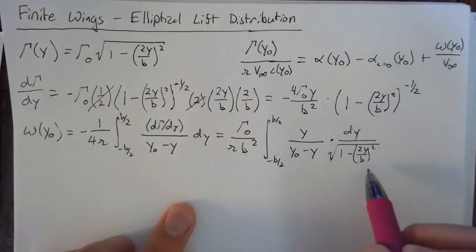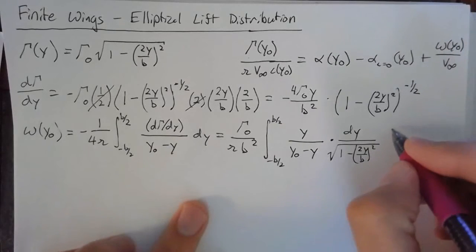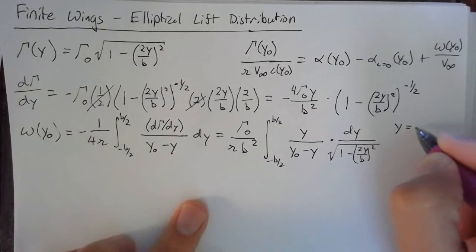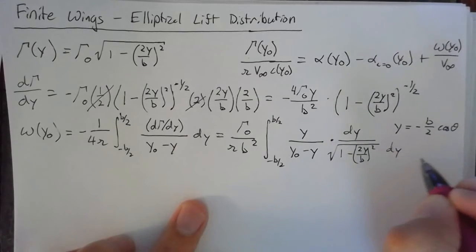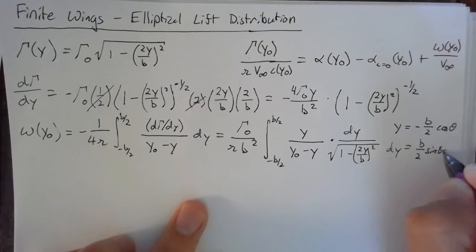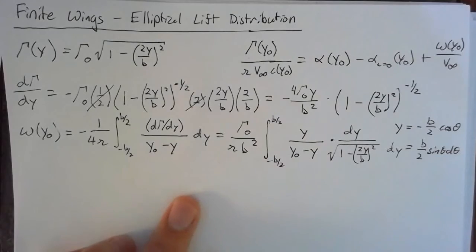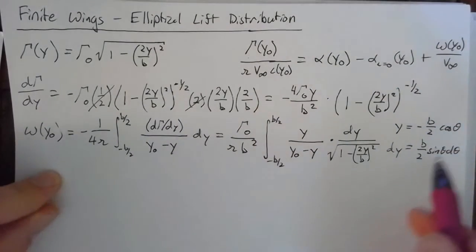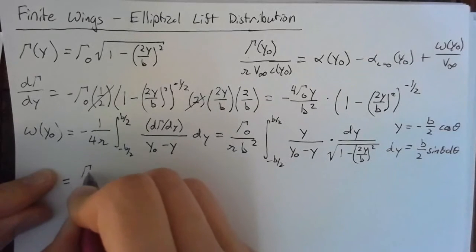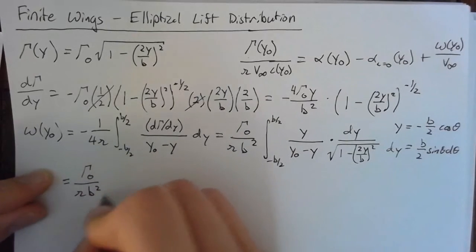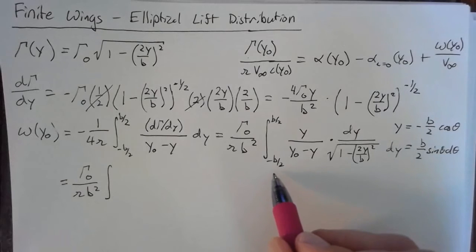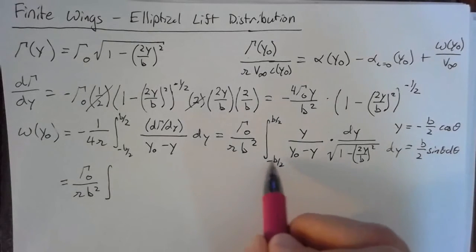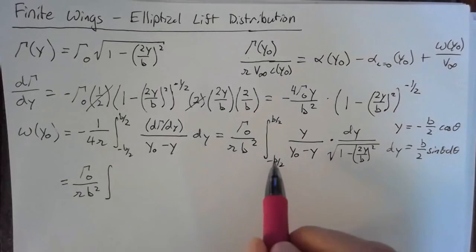In order to integrate this, we need to make a substitution. The substitution we're going to make is y equals negative b/2 times cosine of theta. When we take the derivative to find dy, this becomes b/2 times sine of theta times dθ. Now that we have that, we can go ahead and plug all these in. This becomes gamma naught over π times b squared, and we substitute in our theta values where our y values once were. Theta equals 0 gives y equal to negative b/2, so we're integrating from 0 to π.